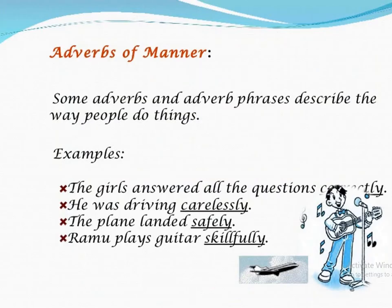Moving ahead, there are types of adverbs. The very first type is adverbs of manner. By the word itself, you know what manner means — manner means the way of doing things, the way how a thing has been done. So the adverb which describes the way a work is being done is the adverb of manner. For example: